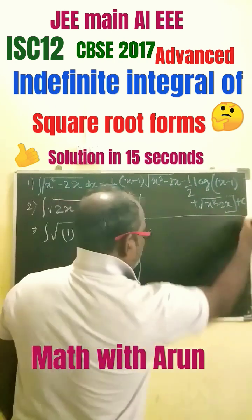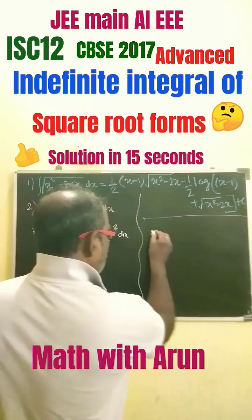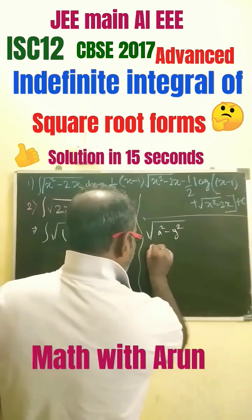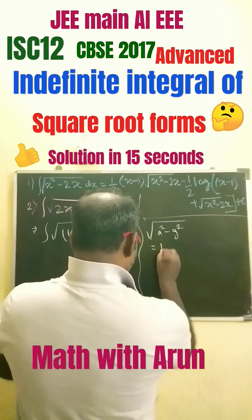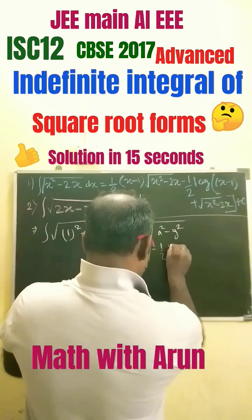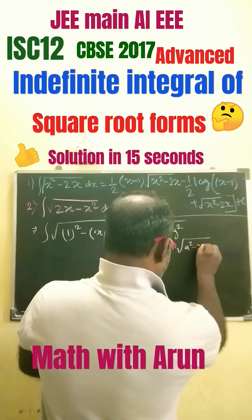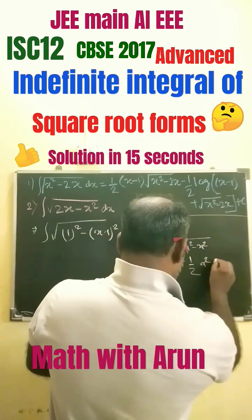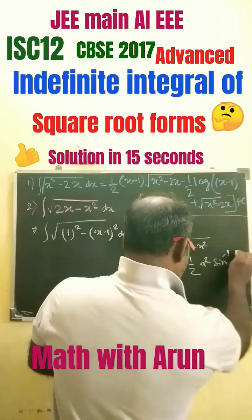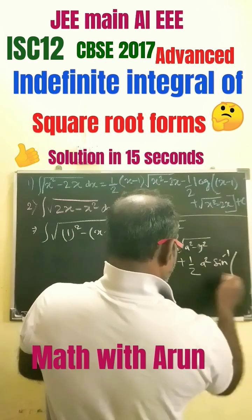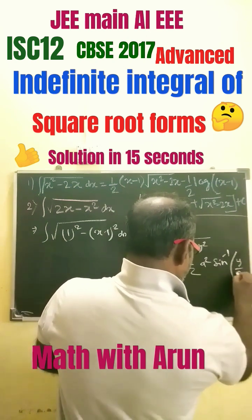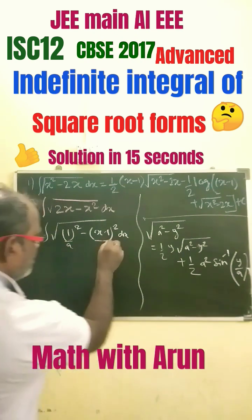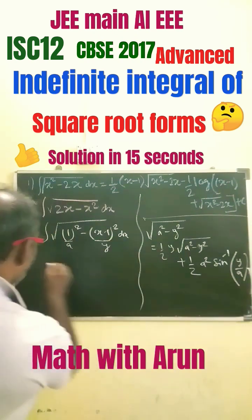Now we should not forget one of the forms already mentioned: the square root of a squared minus y squared equals half of y times the square root of a squared minus y squared, plus half a squared sin inverse of y by a, plus c. Comparing this, taking a here and taking this as y, our answer would be half.